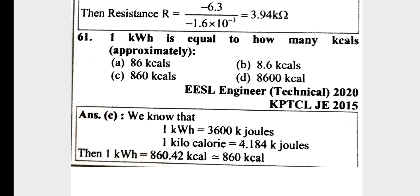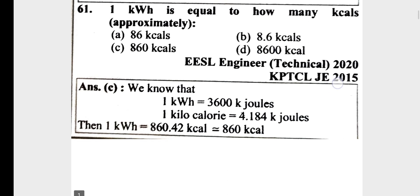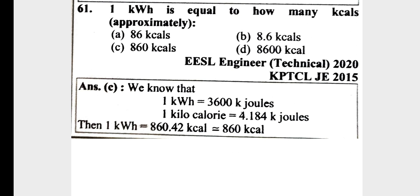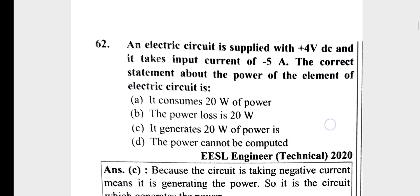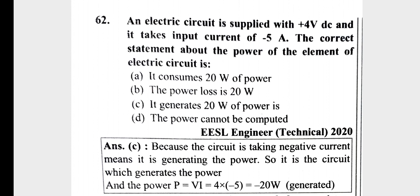Question 1: 1 kWh is equal to how many kcal? 1 kWh is equal to 3600 kJ. Since 1 kcal equals 4.184 kJ, the answer is 860 kcal.